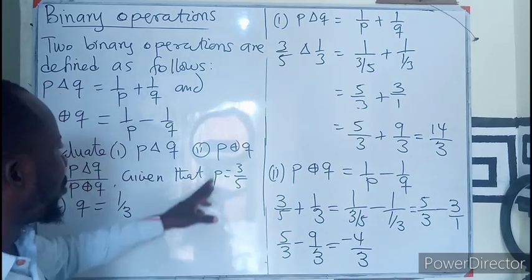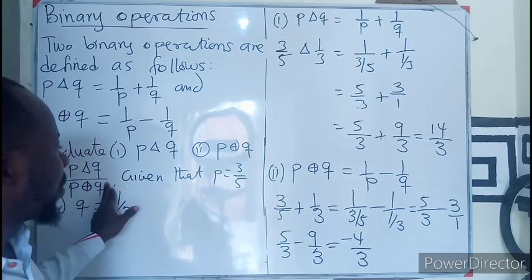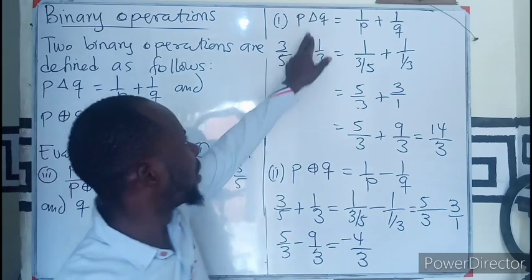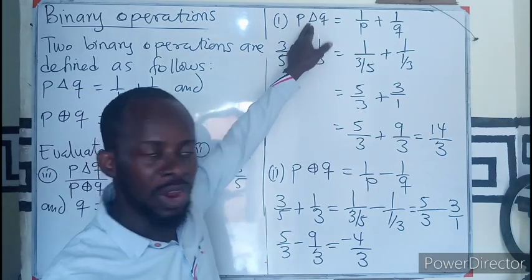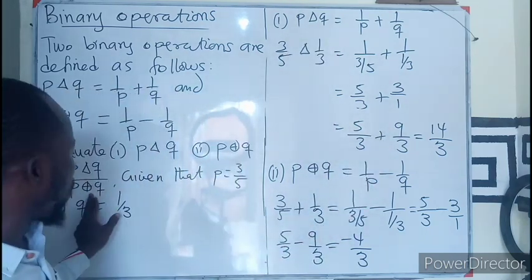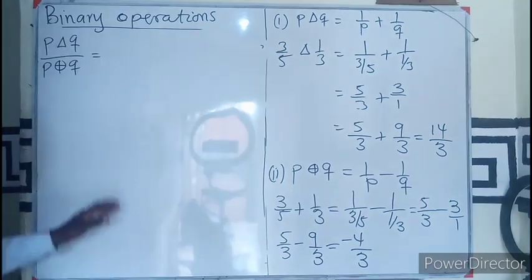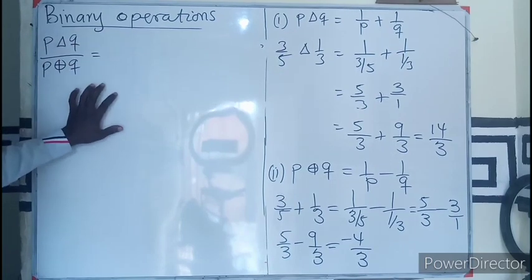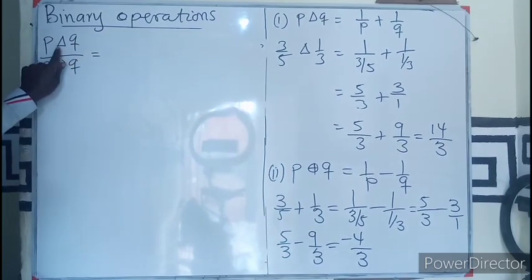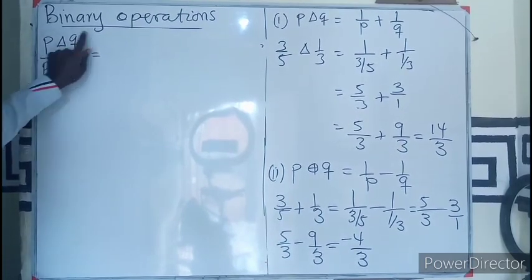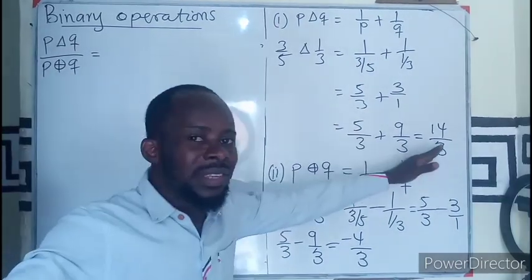From here we now move straight to the third part, which comprises of P triangle Q divided by P circle Q. By this calculation, we are supposed to also do this operation again just as we have done.